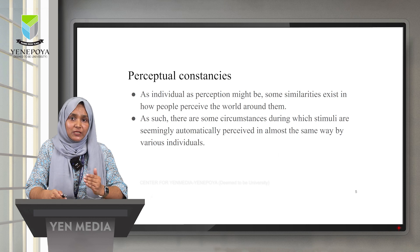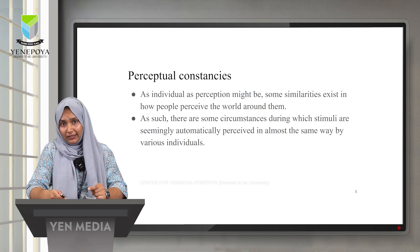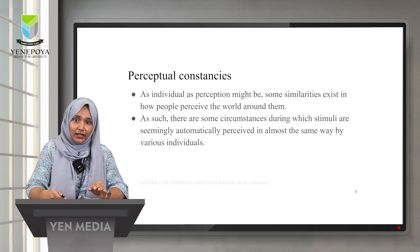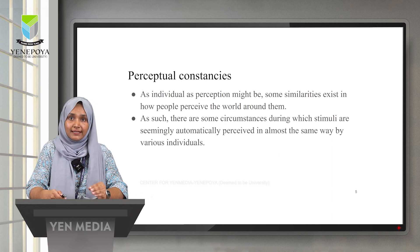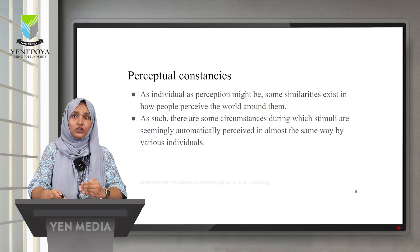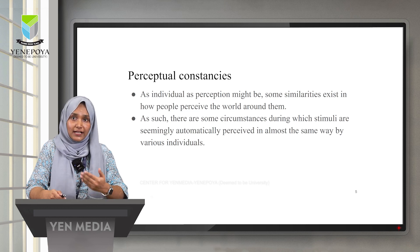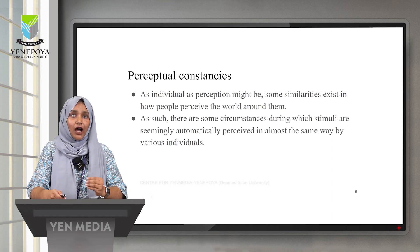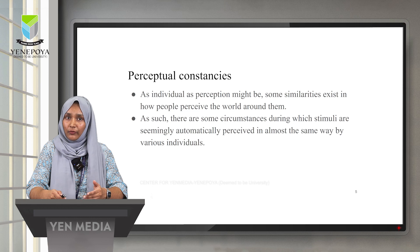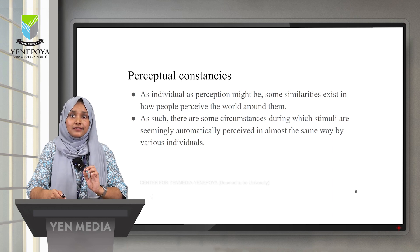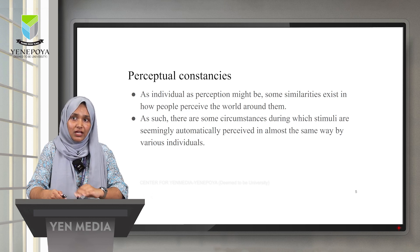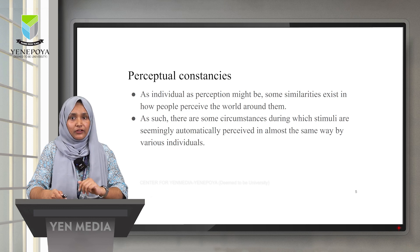As mentioned, perception is a very subjective matter. However, there are certain perceptions that individuals perceive in a similar way — these are called perceptual constancies. There are some circumstances during which stimuli are seemingly automatically perceived in almost the same way by various individuals.